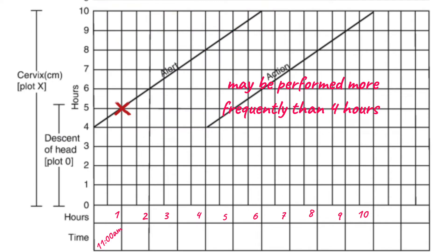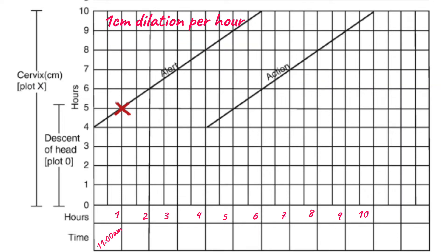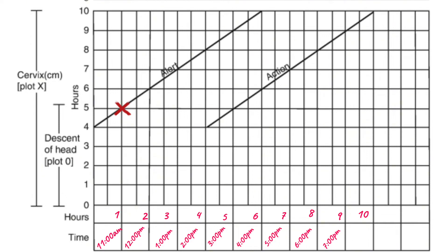In the active phase we want cervical dilation to be about 1 centimeter per hour. So 4 hours from 11 a.m. will be 3 p.m. If the patient came at 11 a.m. with 5 cm dilation and at 3 p.m. the cervical dilation is 9 cm, we plot it here and we can see it is along the alert line.